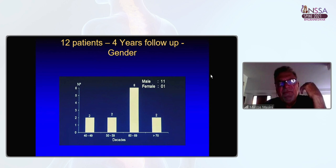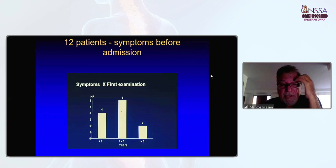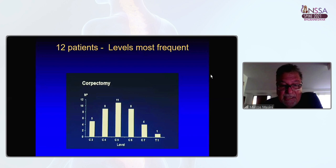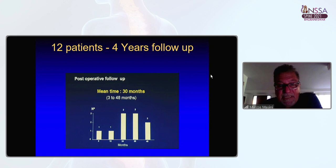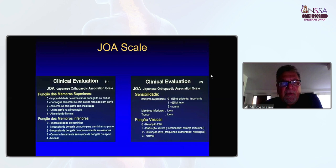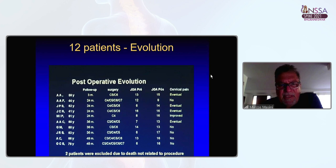We did 12 patients and followed them up over four years. They were older patients, 60 to 69 years of age. Usually they come for first examination one to three years after onset. The most mobile segments of the cervical spine were involved, and we did this operation for patients with spinal cord compression. We used the JOA scale for evaluating the patients.